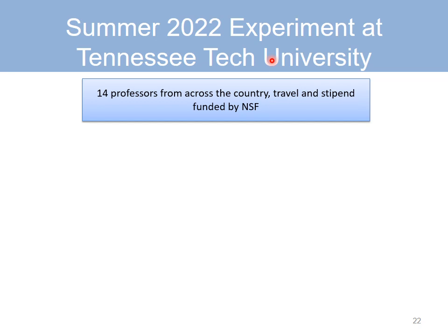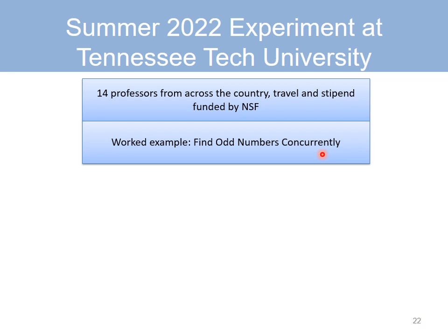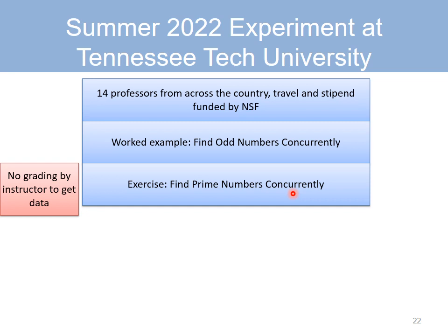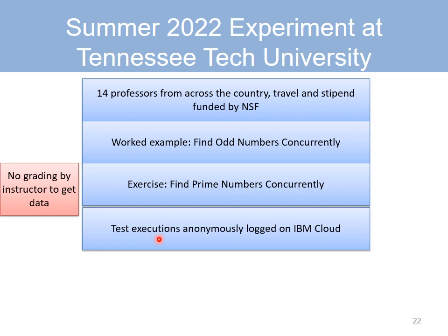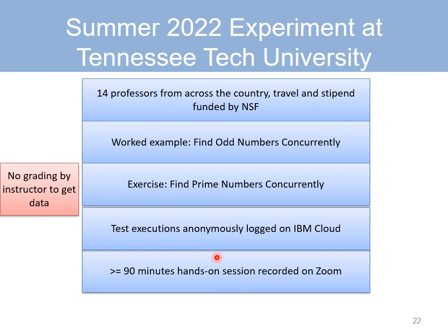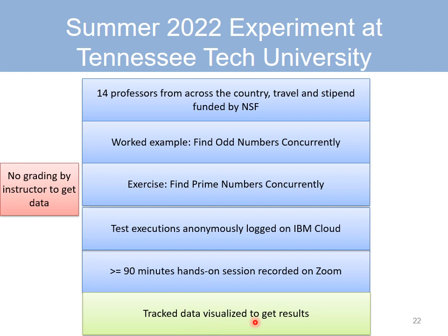This summer, we experimented with this pedagogical model and indirectly the underlying technical model also. 14 professors from across the country traveled to Tennessee Tech University with their travel and stipend covered by NSF. The worked example was to find odd numbers concurrently, and the exercise was to find prime numbers concurrently. The work was not graded, so to get data about our experiment, we anonymously logged all test executions on the IBM cloud. This work was done in a 90-minute session, which was recorded on Zoom. The track data was visualized to get the results of our experiment.